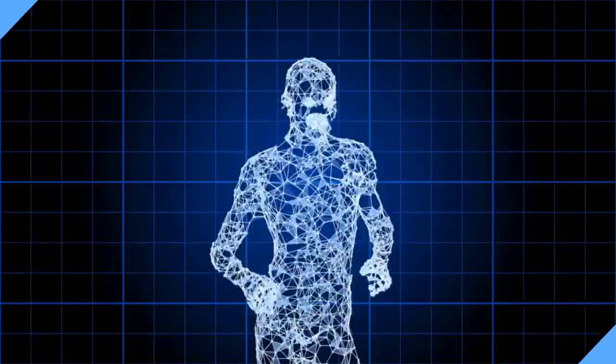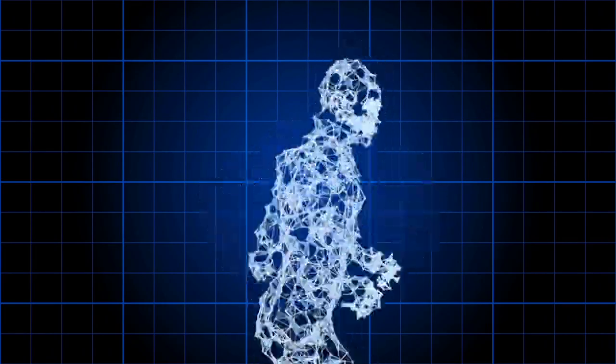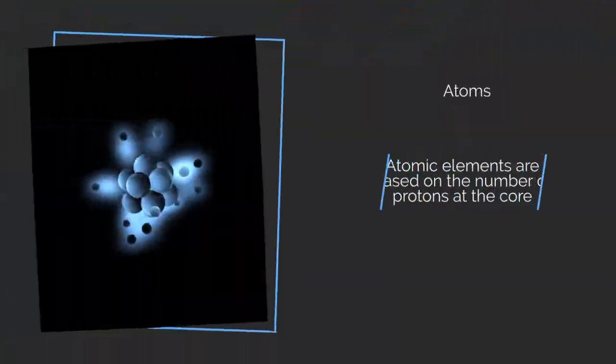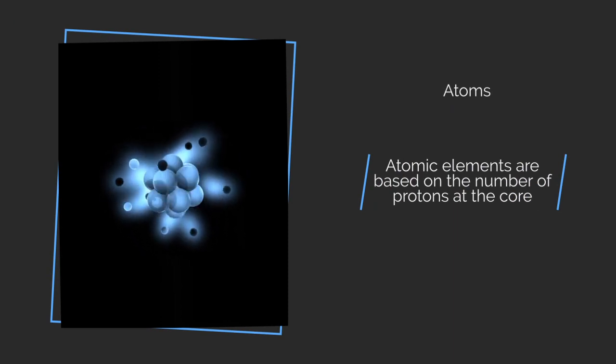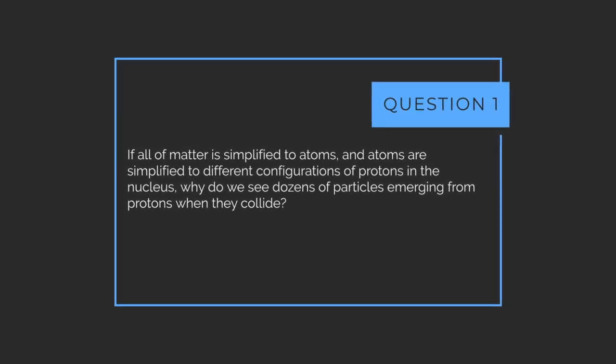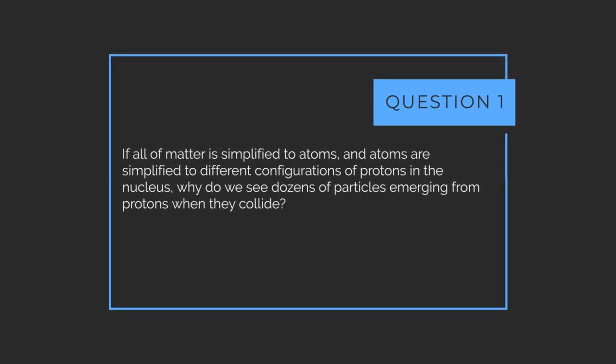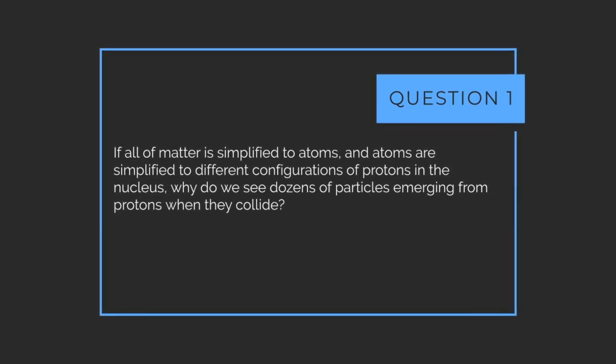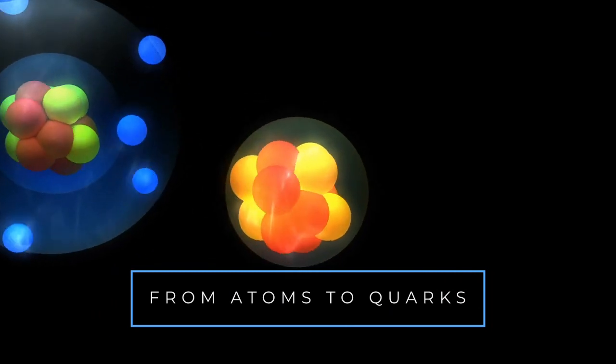Matter, for example a human body, consists of many different molecules which are comprised of different atoms. Different atoms are really just a difference in configurations of protons in the core. So here's the first question: If all of matter is simplified to atoms, and atoms are simplified to different configurations of protons in the nucleus, why do we see dozens of particles emerging from protons when they collide?